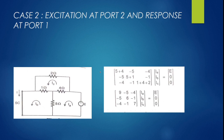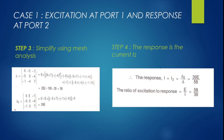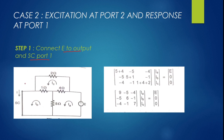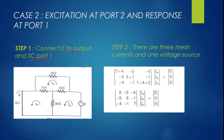In Case 2, we connect the source E to port 2 and short-circuit port 1 to measure the current there. To avoid confusion, mesh currents are renamed Ia, Ib, and Ic, with Ia assigned to the mesh containing the voltage source.